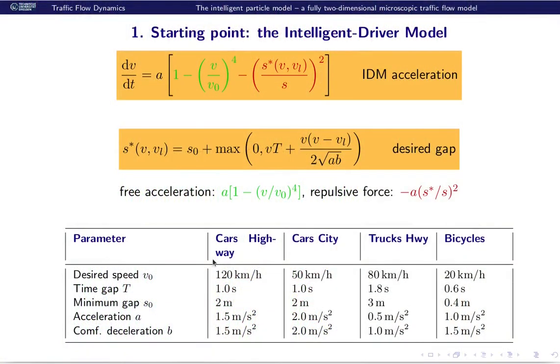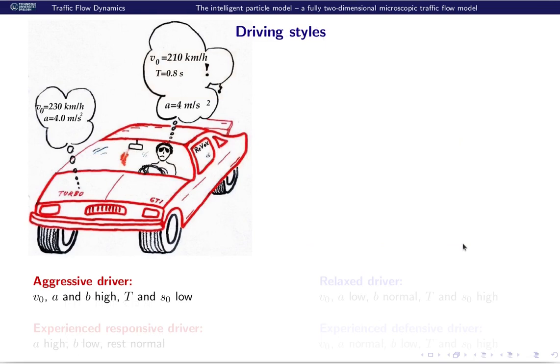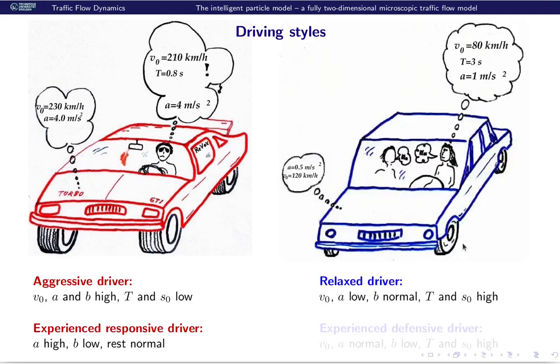As underlying model, we will use the intelligent driver model, but other car-following models are possible as well. The nice thing about this car-following model is that it can be parameterized easily to different sorts of moving agents, fast-moving ones and also slow-moving ones, even pedestrians. Also, this model can reflect different driving styles, driving personalities, for example an aggressive driver, experienced responsive driver, a relaxed driver, and also an experienced defensive driver.